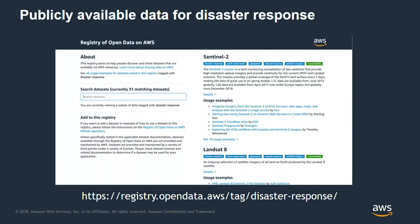The first thing we can bring to bear is the publicly available data on AWS. The best place to find it all is the Registry of Open Data at AWS — registry.opendata.aws. There's a link to filter data sets tagged for disaster response. A lot of it is satellite imagery like Landsat and Sentinel-2, but there's also elevation data — useful for figuring out which way water is going to flow, or which way a lost person might walk.